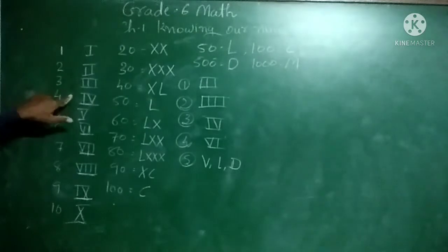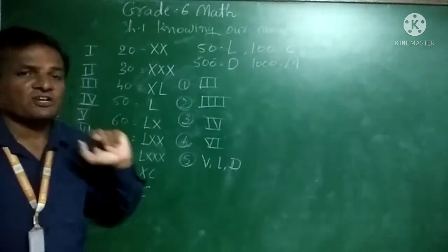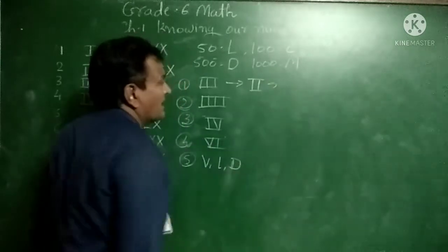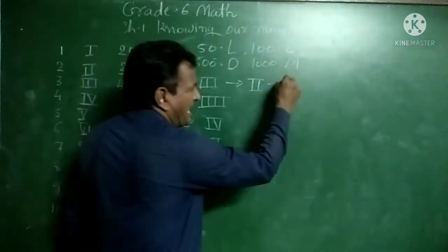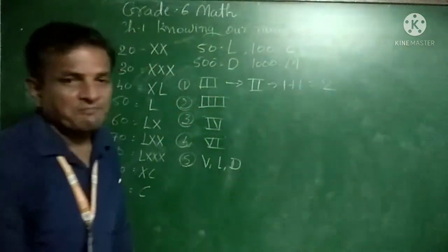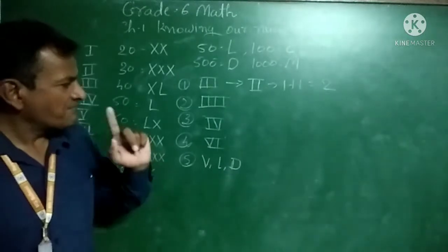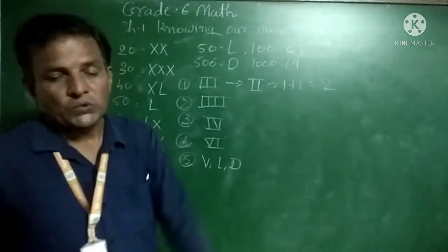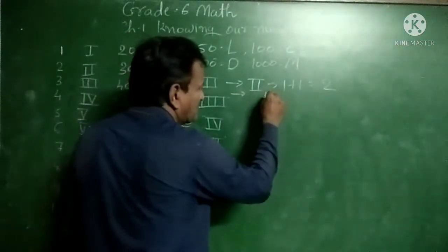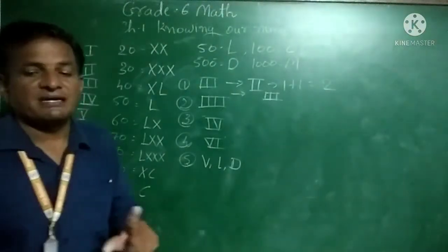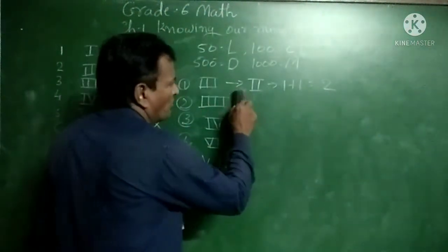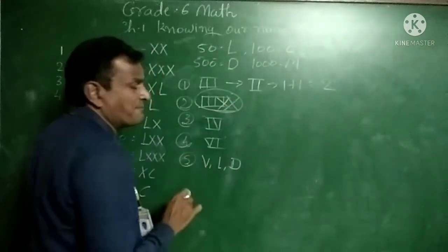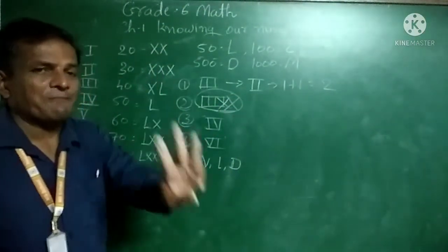Why do we write 3 as III but 4 as IV? We are learning some rules for Roman numerals. First rule: when a symbol is used repeatedly, the values are added — for example, I plus I equals II. Second rule: any symbol can be repeated a maximum of 3 times only. For 3 we write three symbols, but for 4 we do not repeat the symbol four times.